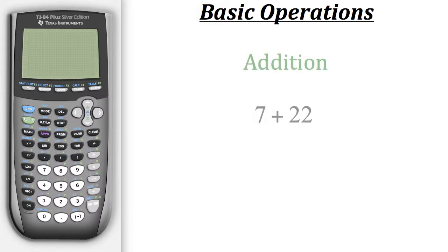So to start off, let's take a look at this basic addition problem. Here we have 7 plus 22. In order to put that in our calculator, we need to first turn it on. Then we'll start by putting in 7, and then plus is over here on the right. And now we punch in 22.